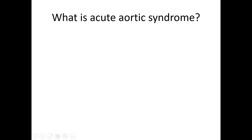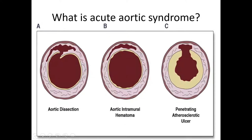So, what is acute aortic syndrome? We have three types. The first is intramural hematoma, which causes separation of the media of the blood vessel into two layers — an outer layer and an inner layer. It could start with that and then rupture inside the lumen to cause a penetrating ulcer, or it could extend into the media and cause aortic dissection.